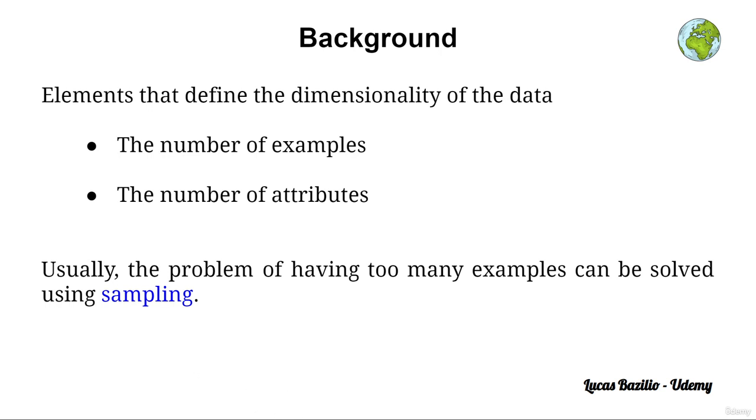Now, the problem of having too many examples, too many rows, can be easily and trivially solved using sampling. Sampling is a fundamental statistical technique that consists in the selection of a subset of all the examples, all the instances from within this dataset. We process only this subset and we estimate the characteristics of the whole dataset. So it is very simple, we just select a subset of all the examples.